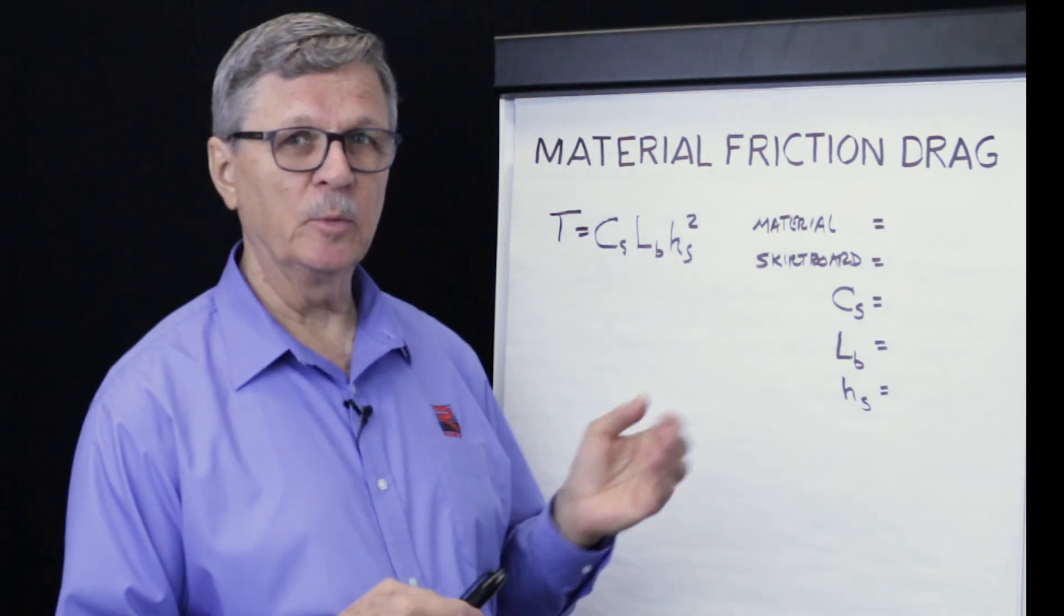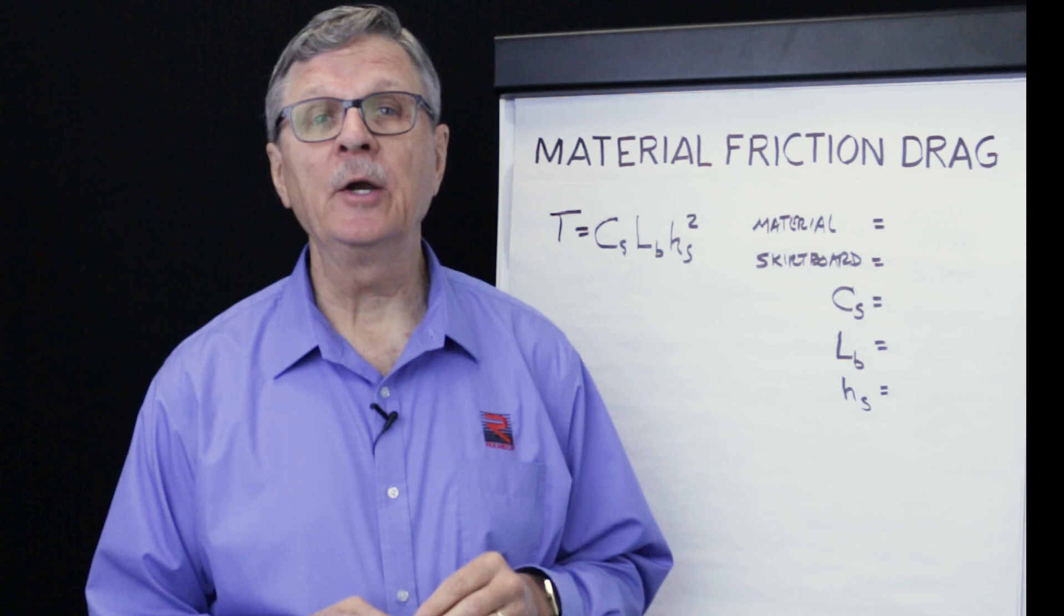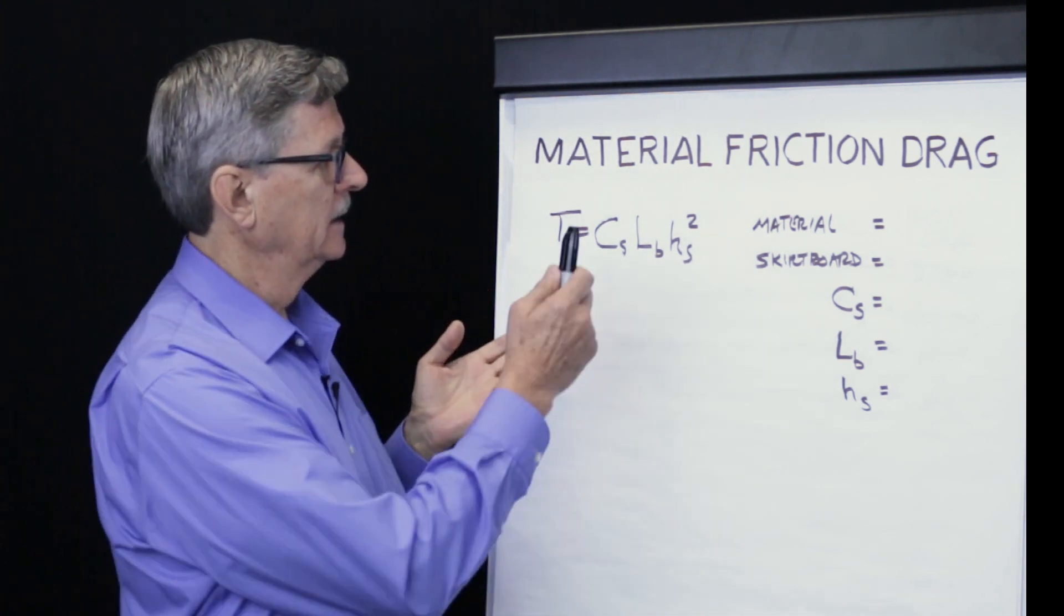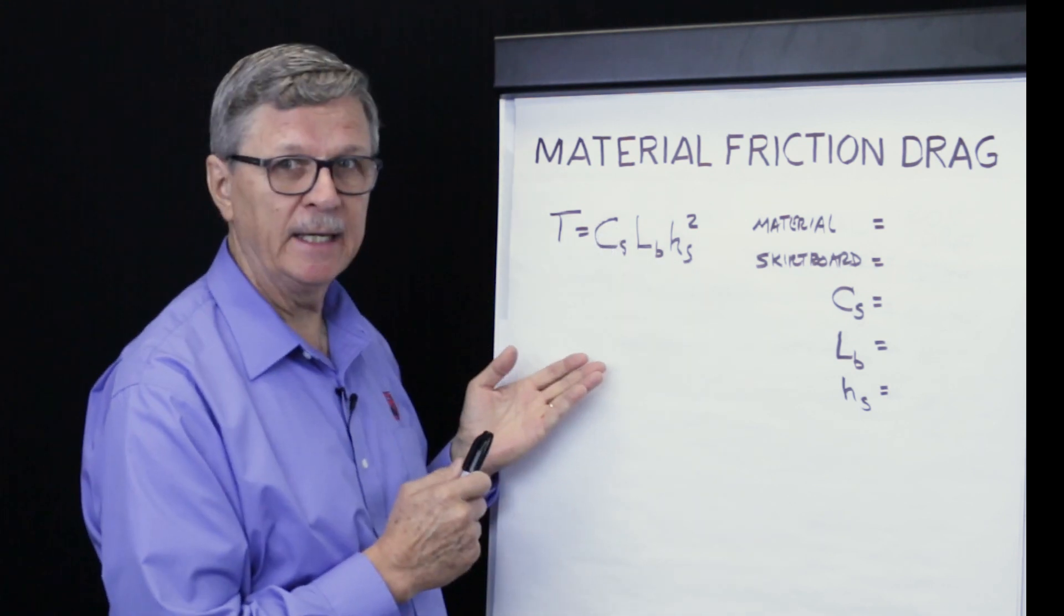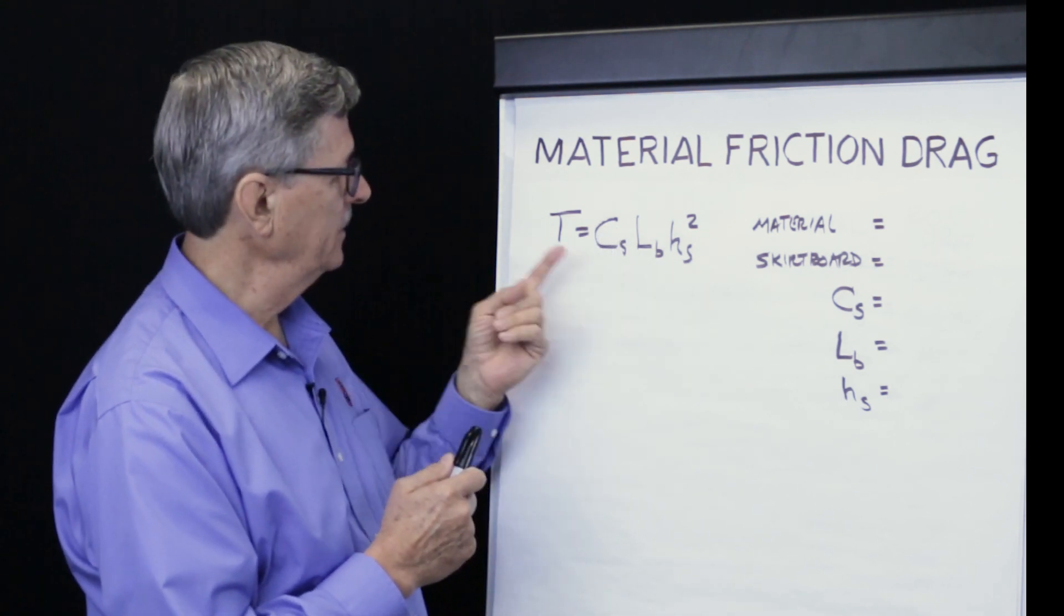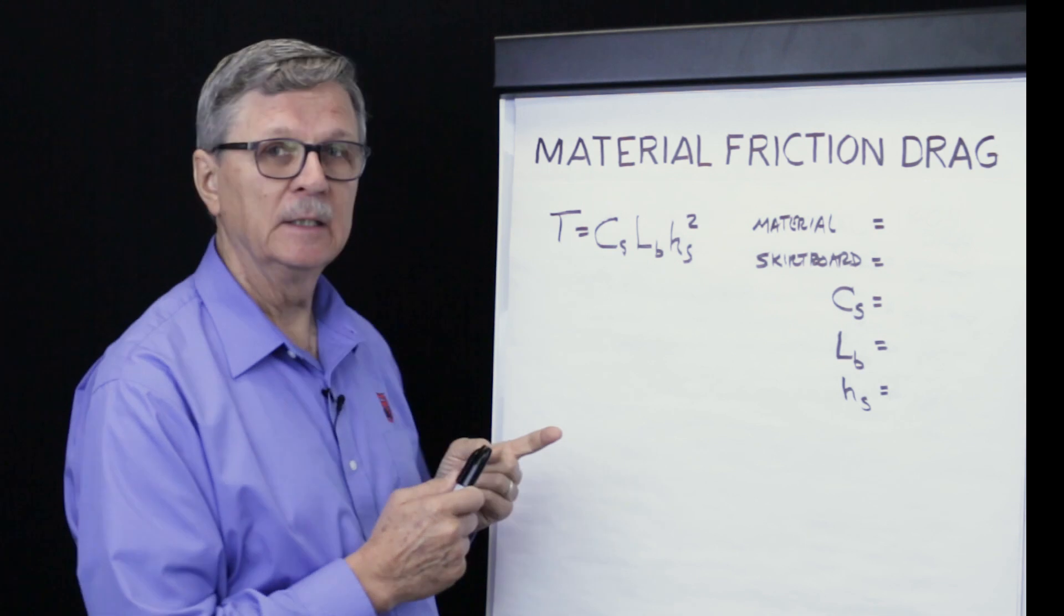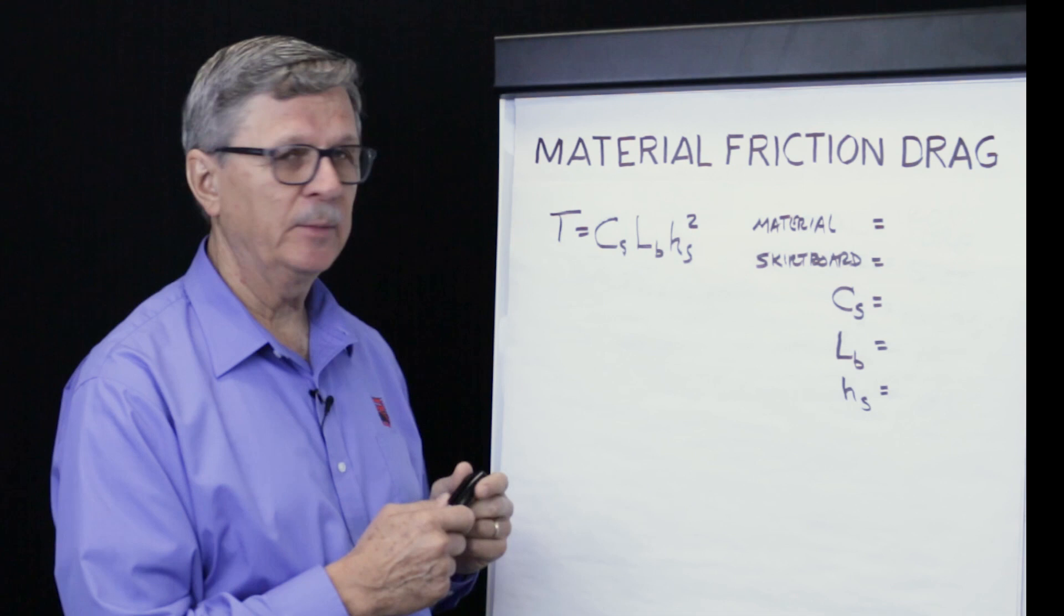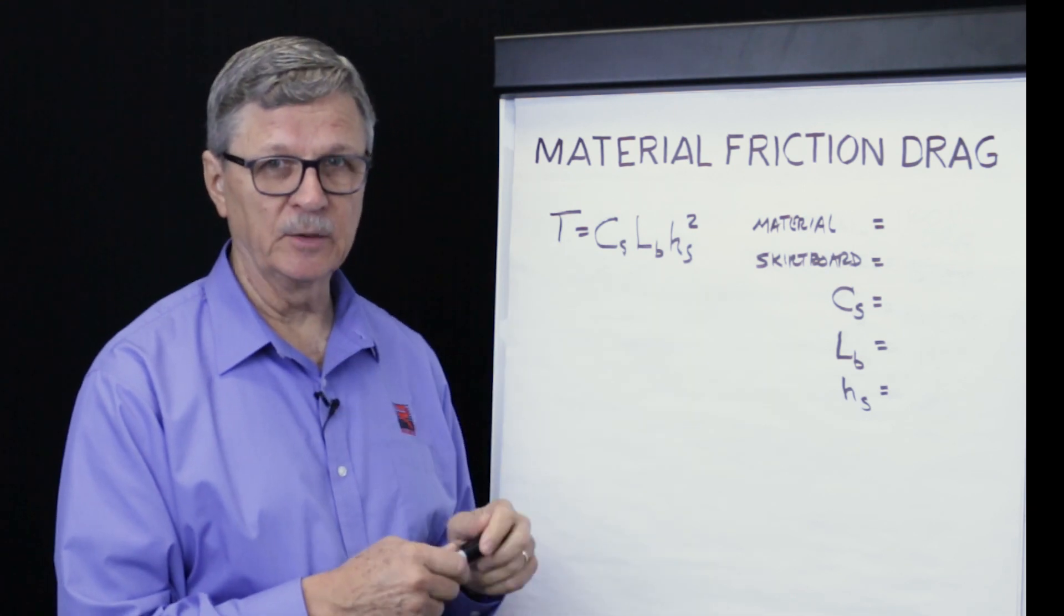In this example, we're going to move iron ore. So to calculate frictional drag from the material rubbing against the skirt board, we simply multiply the frictional coefficient times the length of the skirt board times the square of the material depth within the skirt zone.